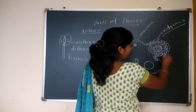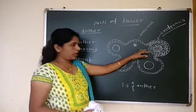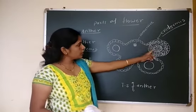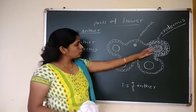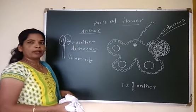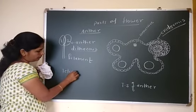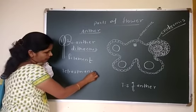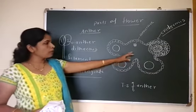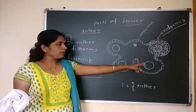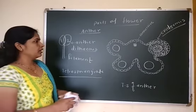In this anther there are two anther lobes, and each anther lobe has two microsporangia, meaning pollen sacs. So there are total four pollen sacs. Such an anther is called tetrasporangiate, since tetra means four. As it is having total four microsporangia, it is called tetrasporangiate.